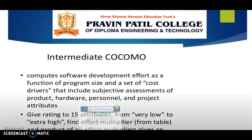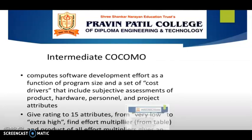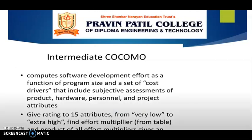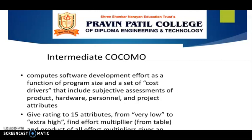The intermediate COCOMO model is an extension of the basic COCOMO model. This estimation model makes use of a set of cost driver attributes to compute the cost of software. It computes software development effort as a function of program size and a set of cost drivers, including subjective assessment of product, hardware, personnel, and project attributes. New ratings for 15 attributes range from very low to extremely high to find the effort adjustment factor.